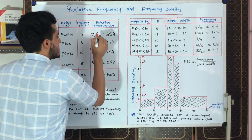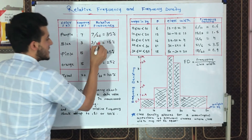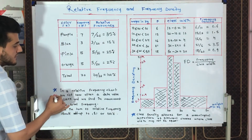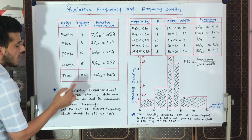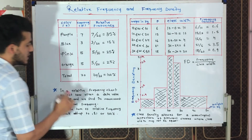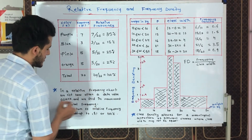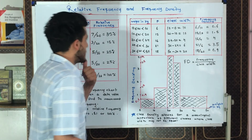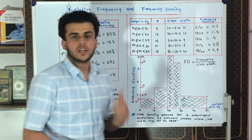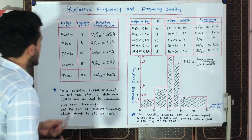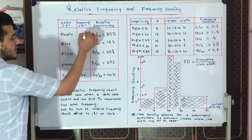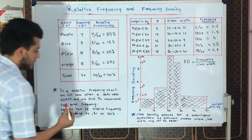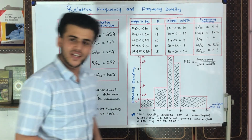Then we divide every frequency by the total frequency. So we do 7 divided by 20, 3 divided by 20, and so on, getting the percentage for each. In a relative frequency chart, we list how often a data value occurs and find its measurement from the total frequency — the percentage-wise contribution of every class interval.